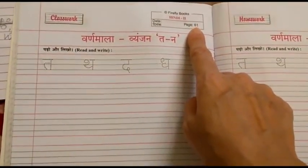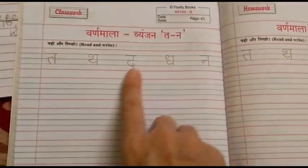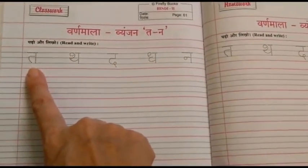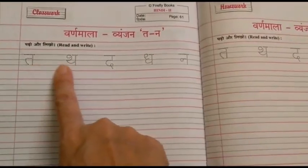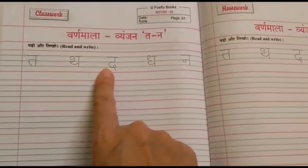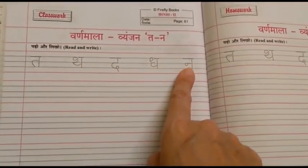Now, we will do page number 61 where we are going to revise writing the letters Vyanjans, T, Th, D, D and Na.